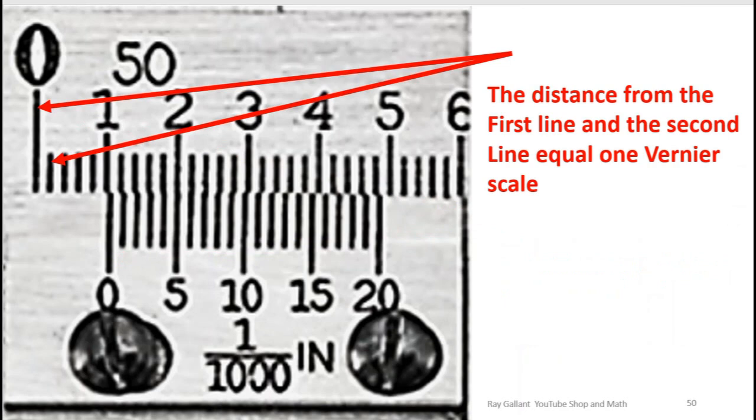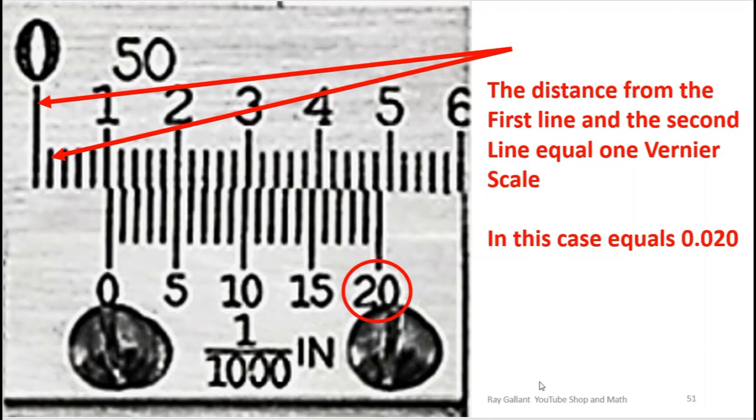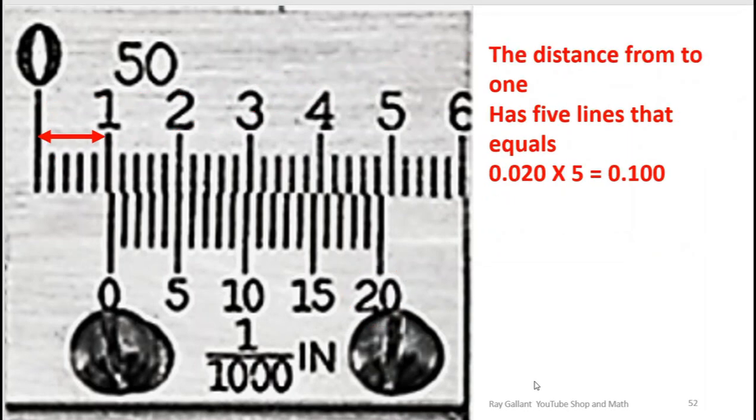The distance from one line to another, keep in mind this guy here if you look at the scale, this guy's a 20 scale. Okay so this guy's a 20 scale. So each one of these lines here is worth 20.